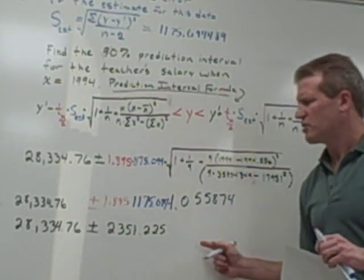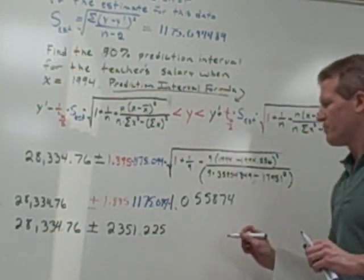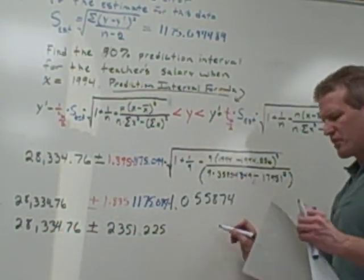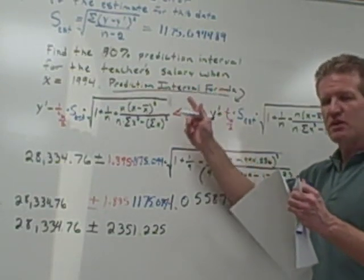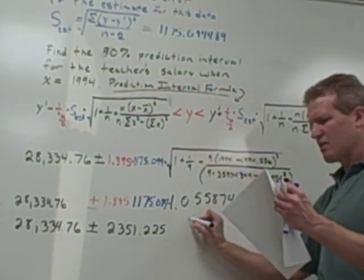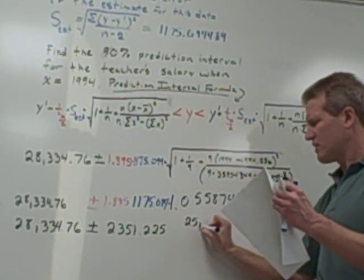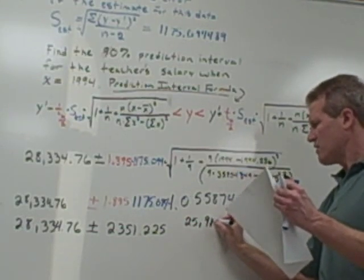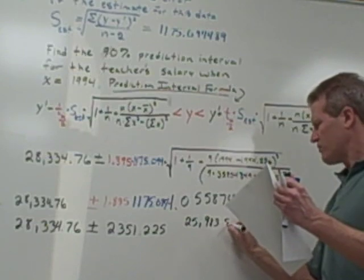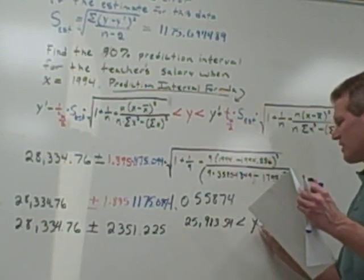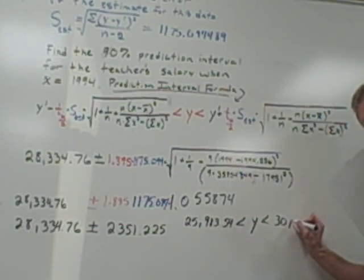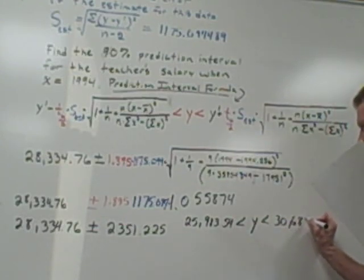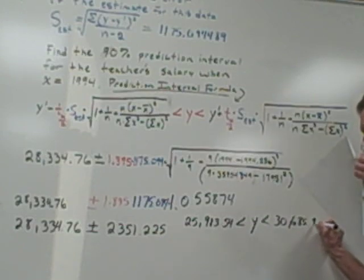Type this in with a subtraction symbol. Type it again with an addition symbol. Here's my final answer. My predicted Y value, and I'm 90% confident that this would be correct, is $25,983.54 is less than my predicted Y, or my actual Y value, which is less than $30,685.98.